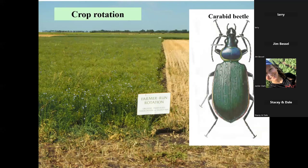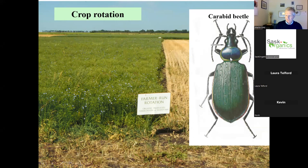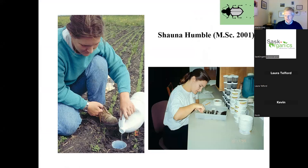Another strategy is crop rotation. Crop rotation for insects works for some insects but doesn't work for all, especially flying insects that can move around. This is probably one of the best organic flax crops we ever grew. In our long-term study, we weren't looking at insect pests - we were actually trapping beneficial insects. This is Shawna Humble, a graduate student from over 20 years ago.